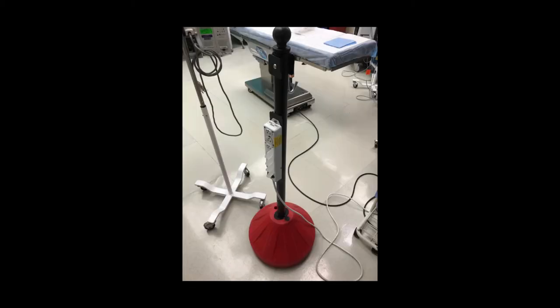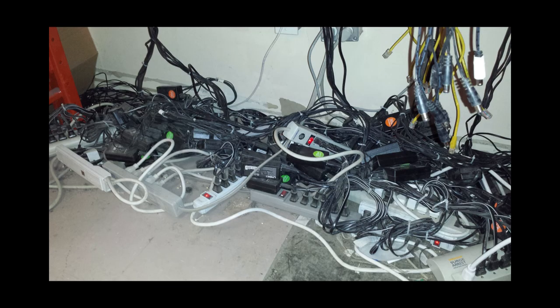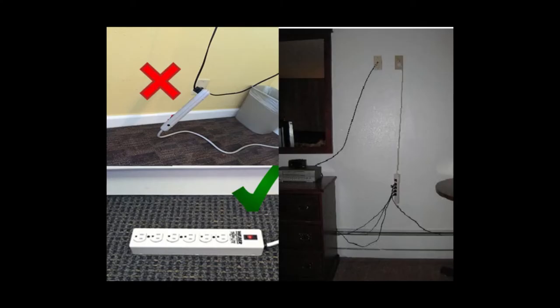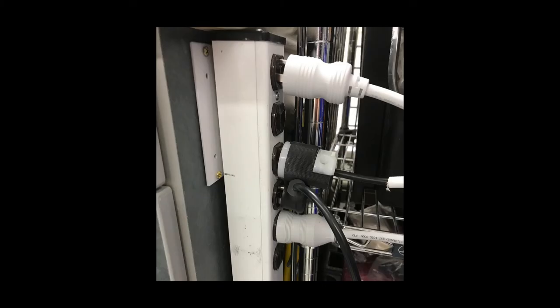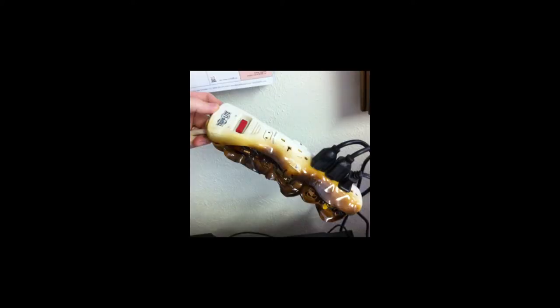If a power strip needs to be used, NFPA 101 gives the following guidance to ensure that staff uses them appropriately. 1: Prevent cords from becoming tripping hazards. 2: Connect devices so that tension is not transmitted to joints or terminals — in other words, no hanging power strips or equipment. 3: No daisy chaining of power strips. 4: Proper insertion of plugs in a receptacle so that no part of the metal prongs are exposed. 5: No overloading of power strips with high-load devices like heaters, coffee pots, or printers.